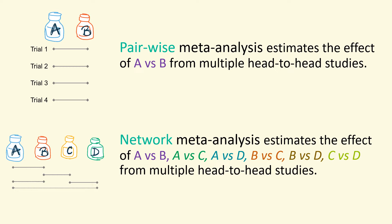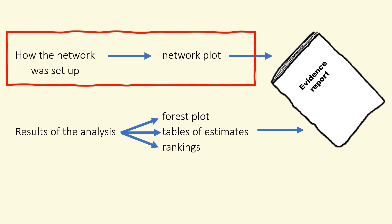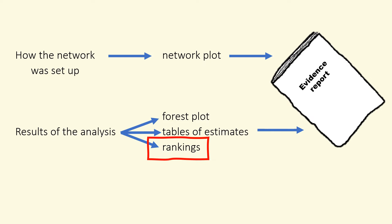To recap, a pairwise meta-analysis estimates the effect of A versus B from multiple head-to-head randomized controlled trials. Network meta-analysis estimates the differences between all the interventions in the network, so you can see the effect of B relative to A, C relative to A, and so on. We will go through four summaries from a network meta-analysis that may be presented to the committee in evidence reports: from visualising the evidence in a network plot, to interpreting estimates in network forest plots and tables, and finally interpreting estimates of intervention rankings.